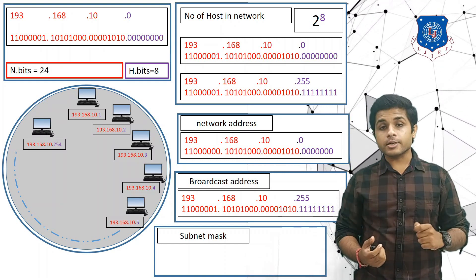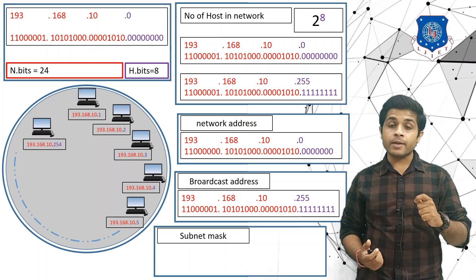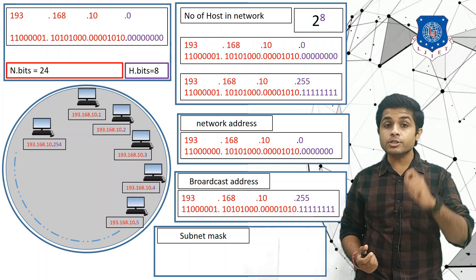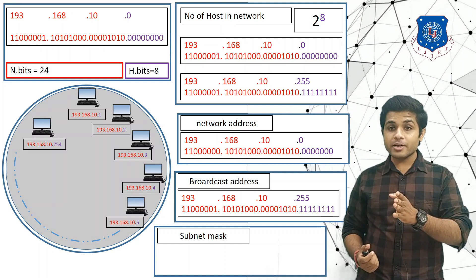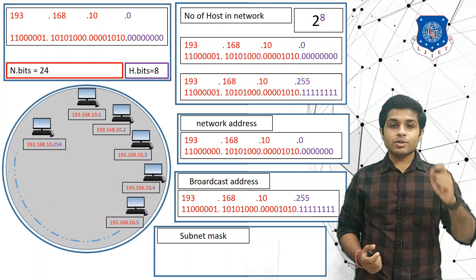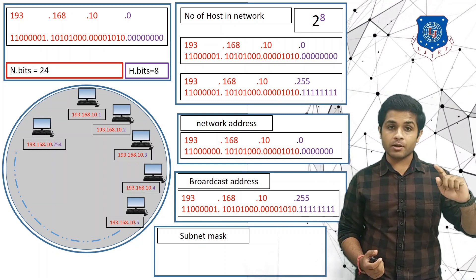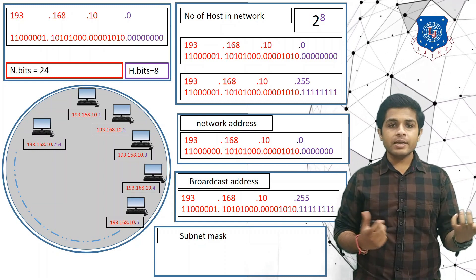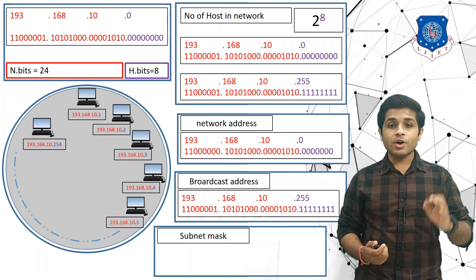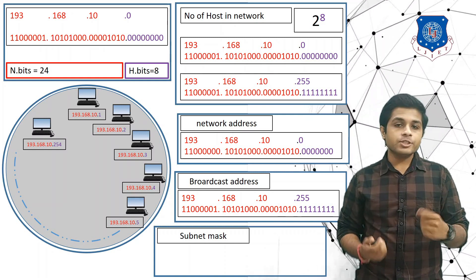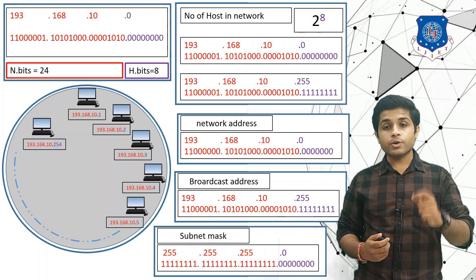If we further increment 1 to the broadcast address 193.168.10.255, we get 193.168.11.0. Notice that the value of the network has changed, meaning that IP address belongs to another network. Remember: the value of the network bits must remain the same throughout the network, but the value of the host bits can change. To find the subnet mask, set all the network bits to 1 and all the host bits to 0, giving us 255.255.255.0.